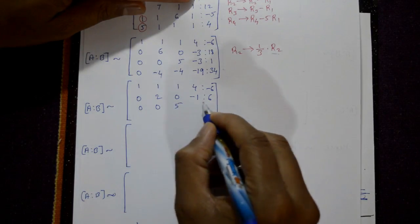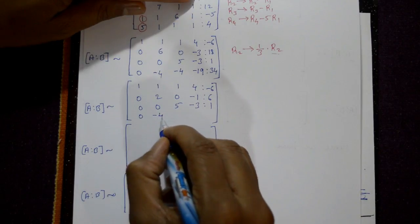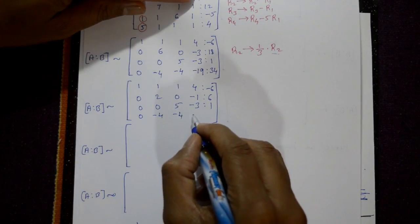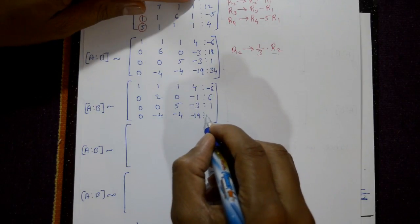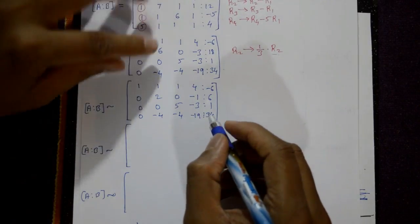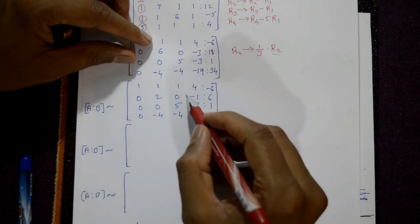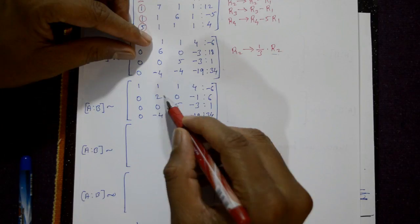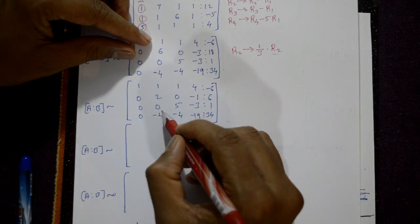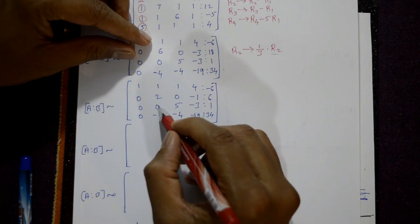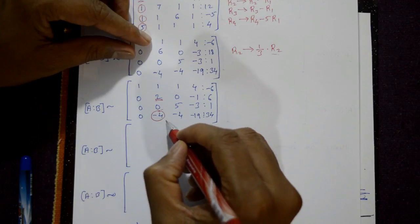The third and fourth rows remain unchanged. Third row: [0, 0, 5, -3 | 1]; fourth row: [0, -4, -4, -19 | 34]. The second row now has a leading number 2, and we need to make the element -4 in the fourth row become 0.